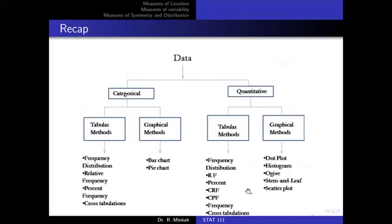Data can be categorical or quantitative. For categorical data, we can use tabular methods such as frequency distribution, relative frequency, and cross-tabulation, or graphical methods like bar charts. For quantitative data, tabular methods include frequency distributions, relative frequency, cumulative frequency, and cross-tabulations, while graphical methods include dot plots, histograms, ogives, stem-and-leaf plots, scatter plots, and box plots.